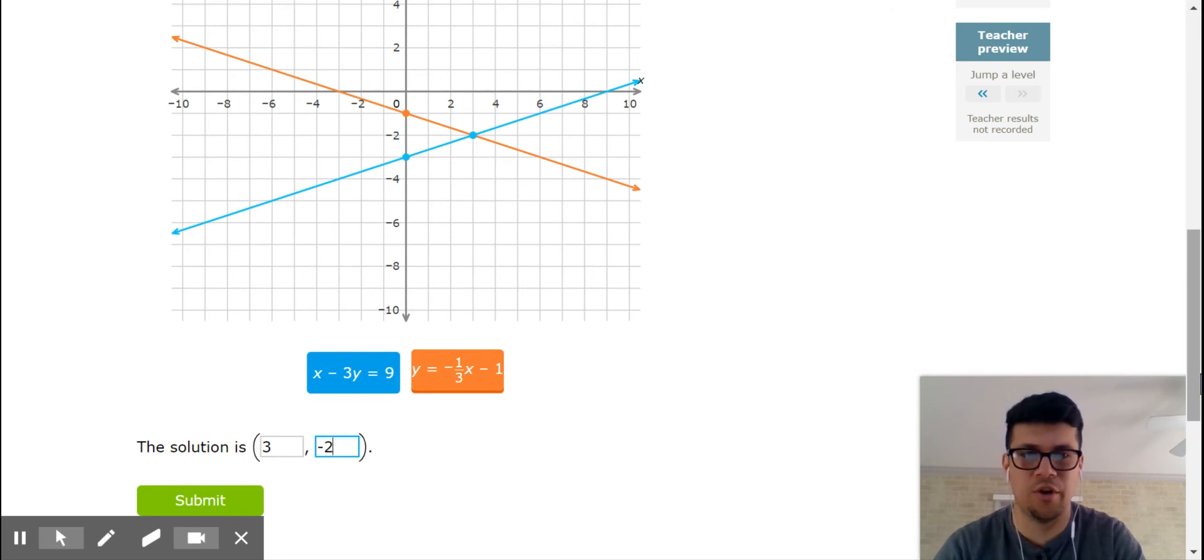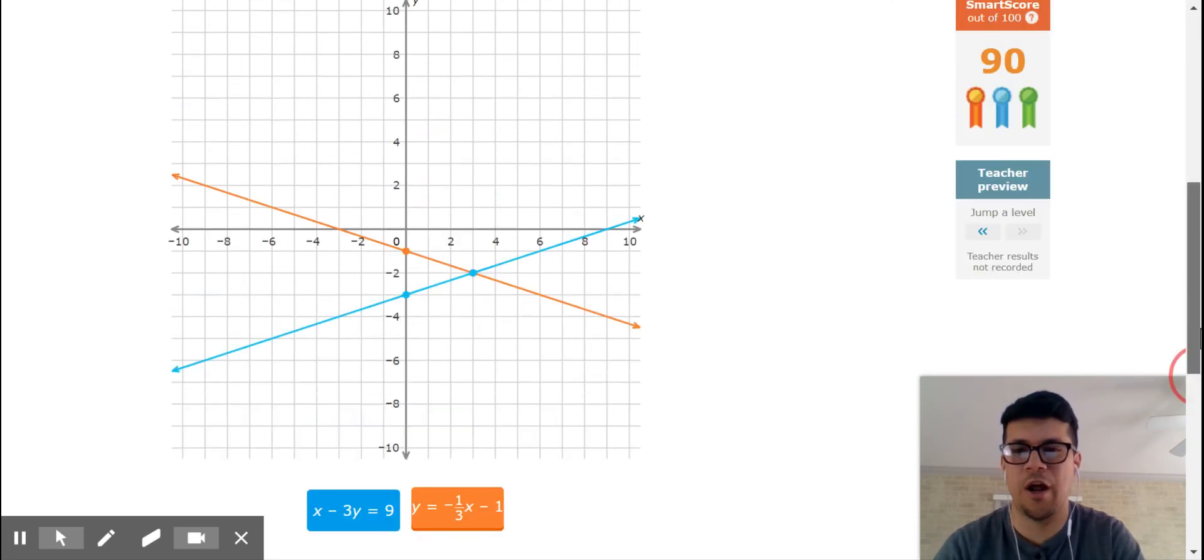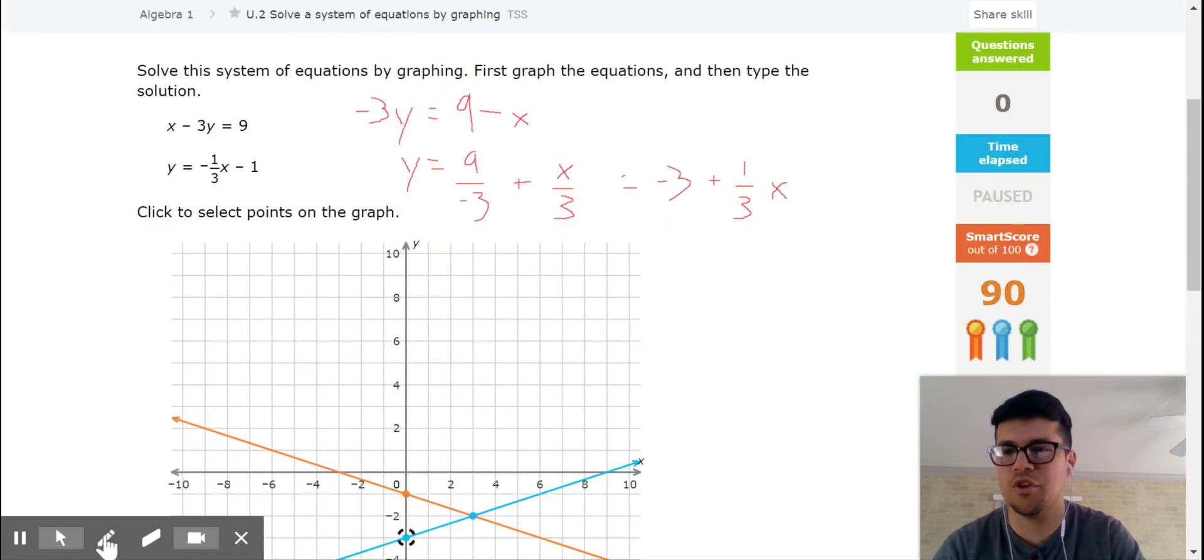Before you finish your answer, one thing that you could do to make sure in case there was any errors, you can evaluate. And actually, you should do this. You should evaluate x equals 3 and y equals negative 2. So you should evaluate these equations by substituting your 3 for your x and your negative 2 for your y. So I'm just going to do a quick mental math check. 3 minus 3 times negative 2. So negative 3 times negative 2 is 6. 3 plus 6 is 9. So it works for this first one. And then I can check the second one. Negative 1/3 times 3 gives me negative 1. Negative 1 minus 1 is negative 2. So it checks out. I know that my solution is correct.